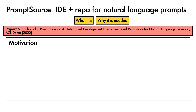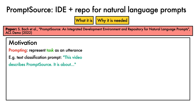We'll start with why PromptSource is needed. Prompting refers to the act of formulating a natural language utterance that can be fed to a language model to induce it to perform a task. For example, in the case of text classification into research disciplines, we might formulate a prompt like 'this video describes PromptSource, it is about', then the model completion — in this case 'NLP' — can be linked to a class label for classification.